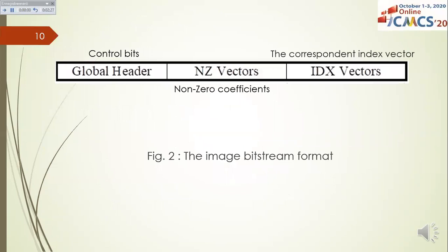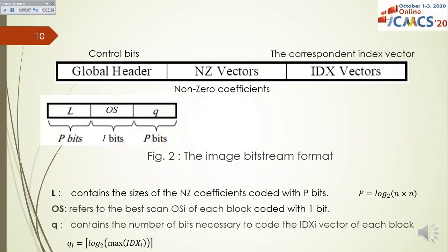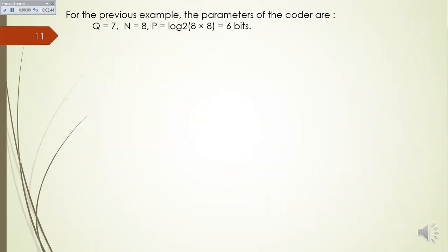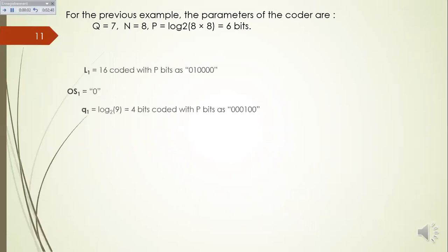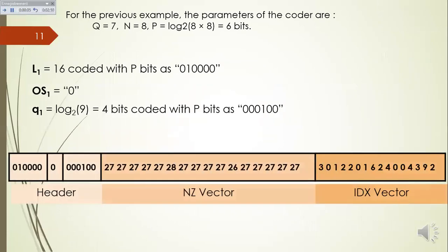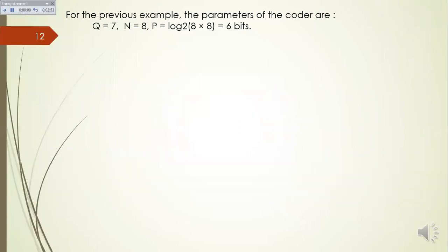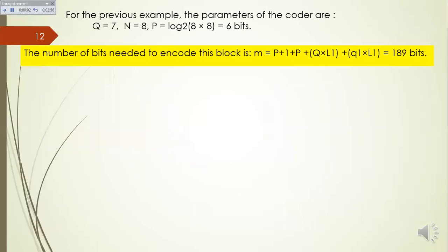The encoded image bitstream is shown in this figure and is composed of a global header containing control bits and two other vectors. The global header is composed of three parts: L, O/S, and Q. For the previous example, the parameters of the coder and the bit count are shown. The number of bits needed to encode this block is compared against nearly similar methods for the same blocks.